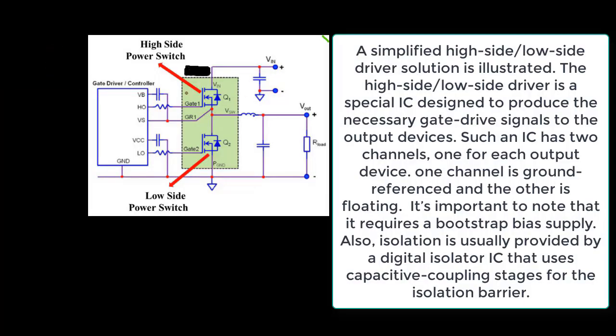A simplified high-side/low-side driver solution is illustrated. The high-side/low-side driver is a special IC designed to produce the necessary gate-drive signals to the output devices. Such an IC has two channels, one for each output device. One channel is ground-referenced and the other is floating. It's important to note that it requires a bootstrap bias supply. Also, isolation is usually provided by a digital isolator IC that uses capacitive-coupling stages for the isolation barrier.